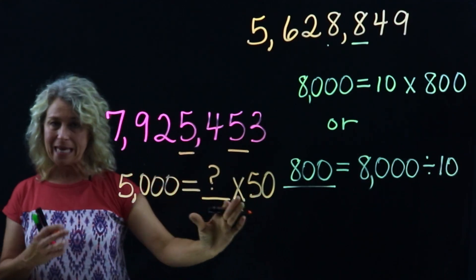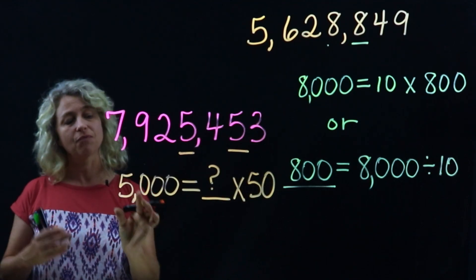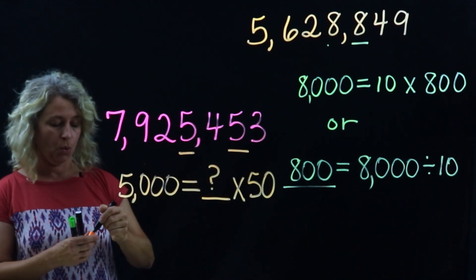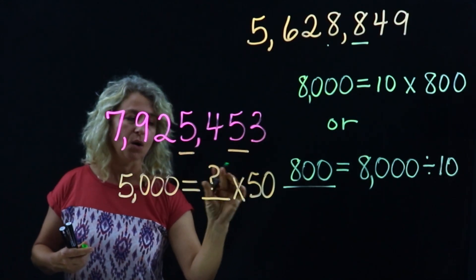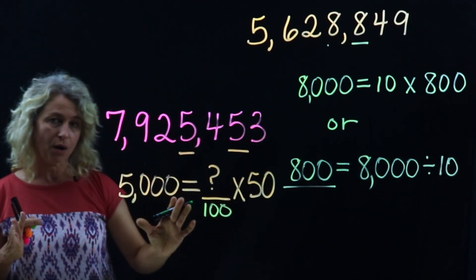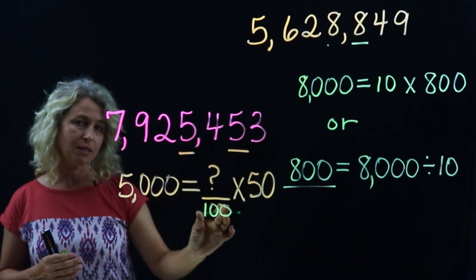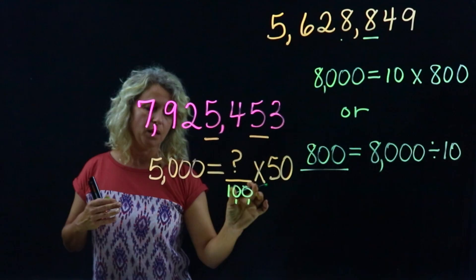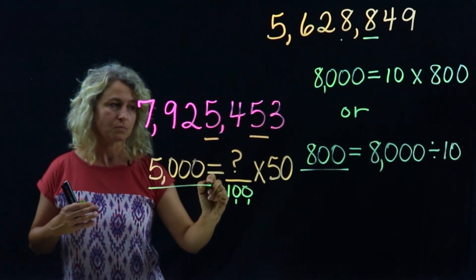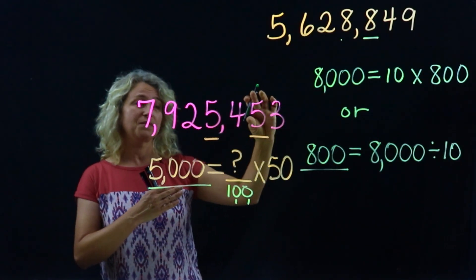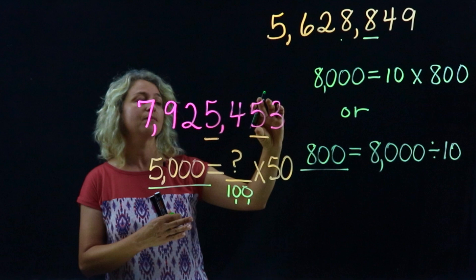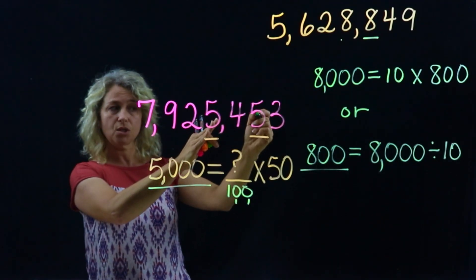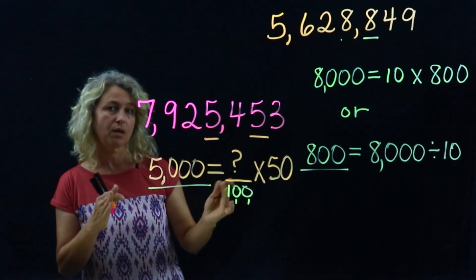So is five thousand ten times fifty? Ten times fifty would be five hundred — that's not five thousand. What needs to go in the blank? Would one hundred work? One hundred times fifty: adding two zeros to fifty gives five thousand. Yes! So this five is one hundred times more than the other five. Depending on how spread apart the digits are, you can figure out how many times greater one is than the other.